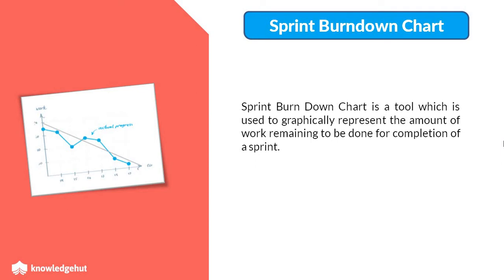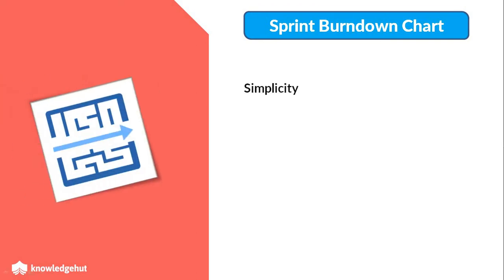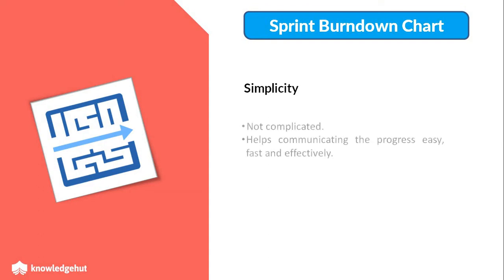Why is the Sprint Burn Down Chart used? It is used for multiple reasons. First, its simplicity. One of the main reasons for the popularity of the Sprint Burn Down Chart is its simplicity. There is nothing complicated in it and even a kid can understand it. This simplicity helps the team to communicate the progress of the project to all the stakeholders in a very easy, fast and effective manner.